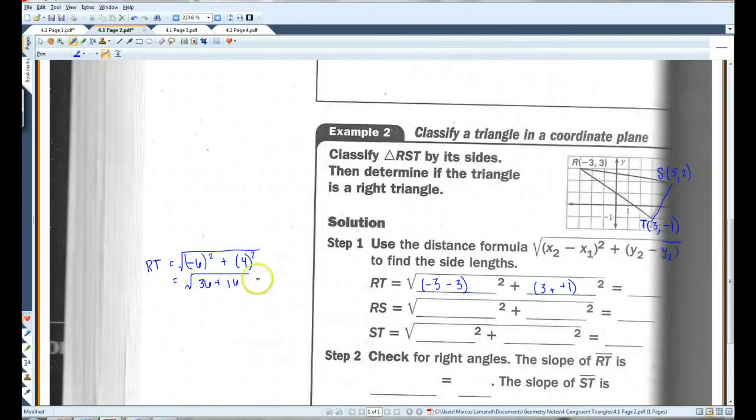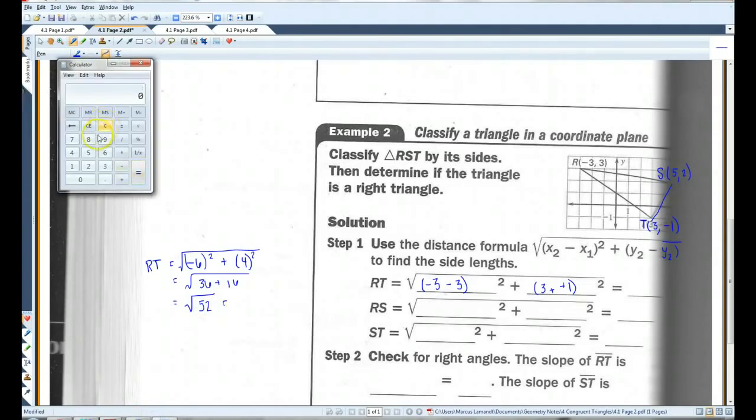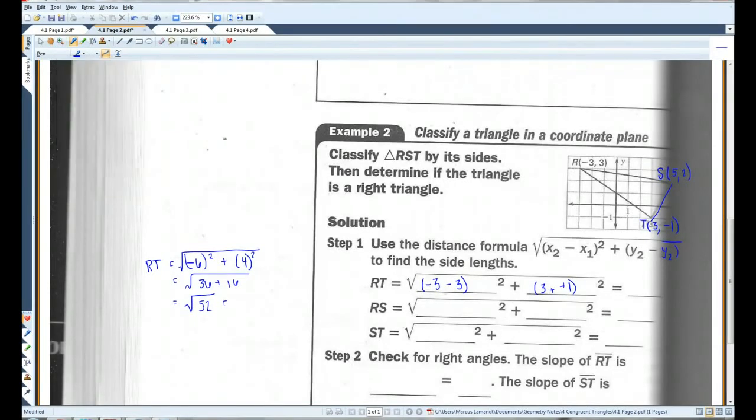36 plus 16. This will give you, let's see here, square root of 52. Let me pull out the calculator. 7.21, about. And you know what? Actually, we don't even need to put it in decimal form. It doesn't say to, so we'll just leave it in terms of, leave it as a square root.